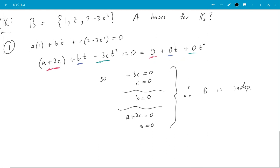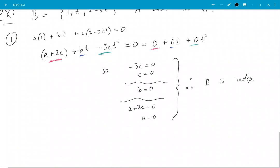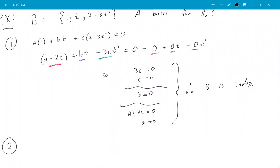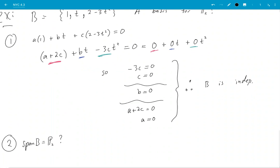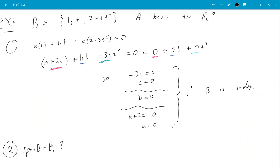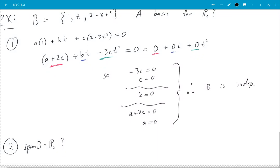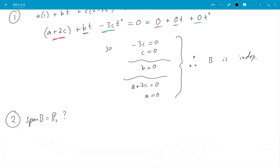So it's independent. Now does it span? Oh this is uglier. Well span is going to get a bit ugly for now but we'll just grind it out. How can I determine if span of b is equal to all of P₂?